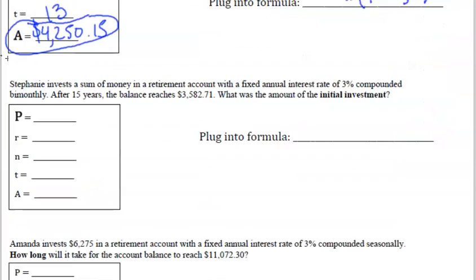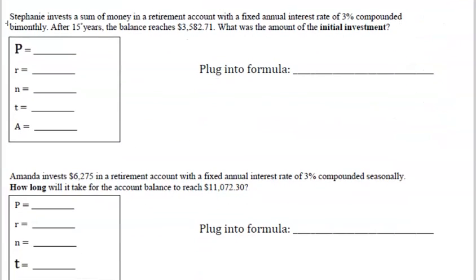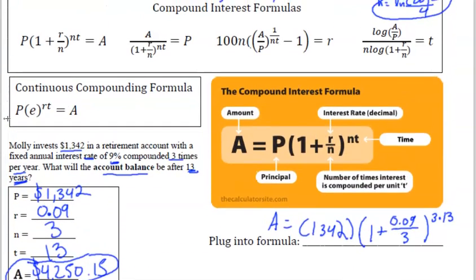Let's look at the next one. Stephanie invests a sum of money in a retirement account with a fixed annual interest rate of 3% compounded bimonthly. After 15 years the balance reaches $3,582.71. What is the amount of the initial investment? So we're looking for the principal amount. The rate was 3% as a decimal in standard form that's .03. Bimonthly, well there's 12 months of the year and bi means 2 so there's 2 times each month so that would be 24 altogether.